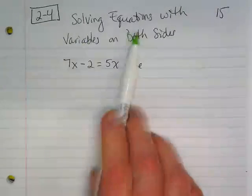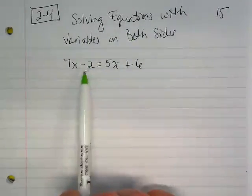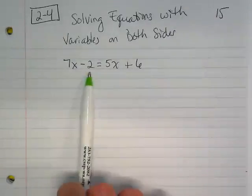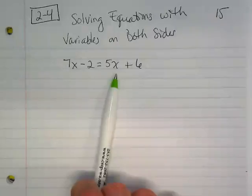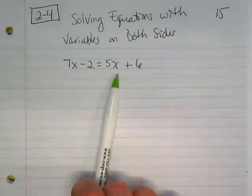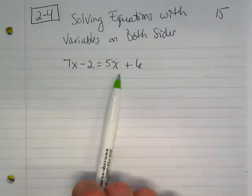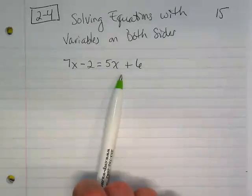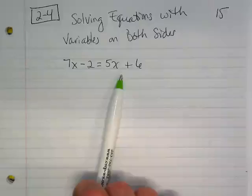Okay, so solving equations with variables on both sides. If you notice in this example, there's a 7x minus 2 on the left side of the equation and a 5x plus 6 on the other side. I really think about this as just combining like terms. Your like terms just might be on the other side of the equal sign.